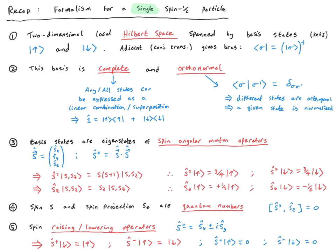Specializing to a single spin-half particle: applying S-squared to the up spin gives three-quarters times the up spin, since the eigenvalue is s(s+1) = 3/4 for s = 1/2. Applying S-squared to the down spin gives the same, because both are still spin-half particles — up and down refer to the z projection. Applying Sz gives eigenvalue +1/2 for up spin and -1/2 for down spin, by convention.